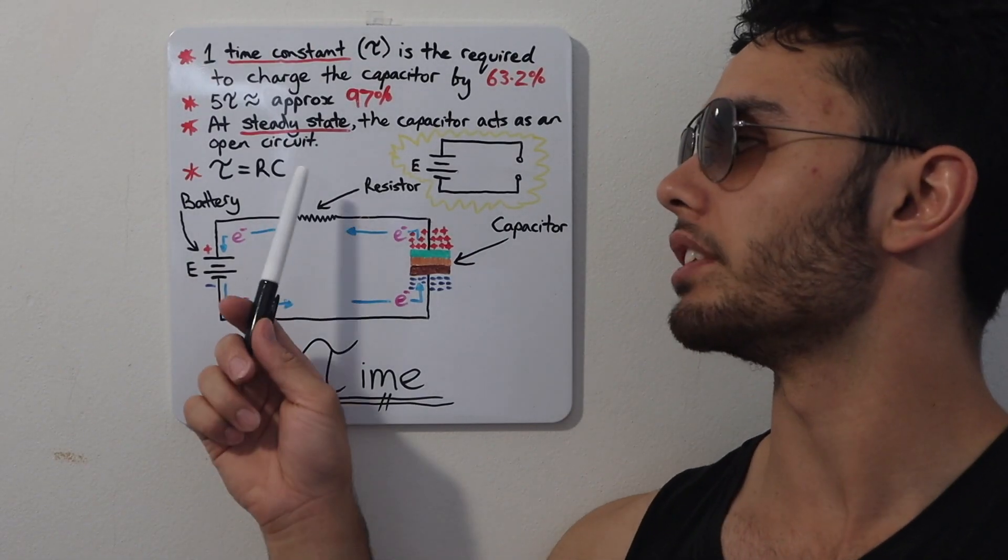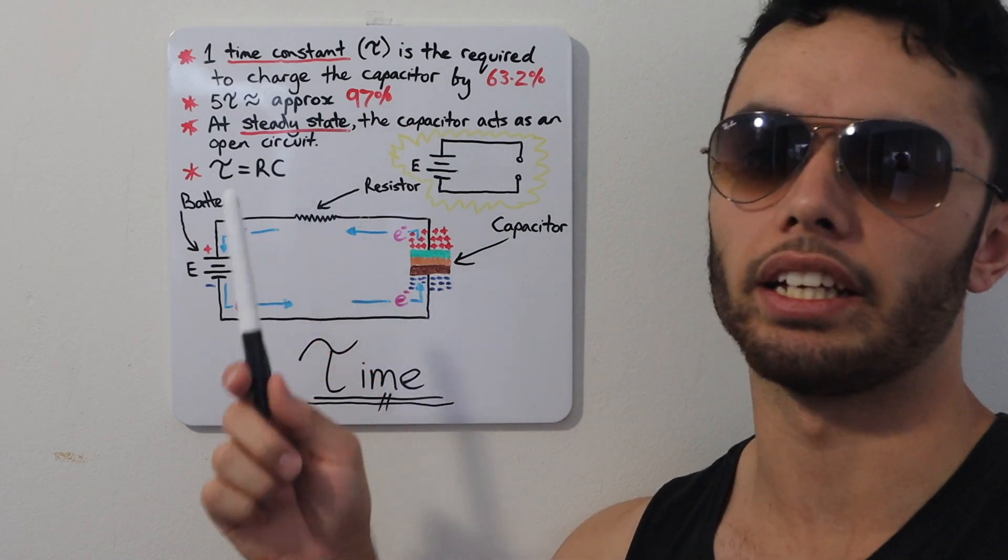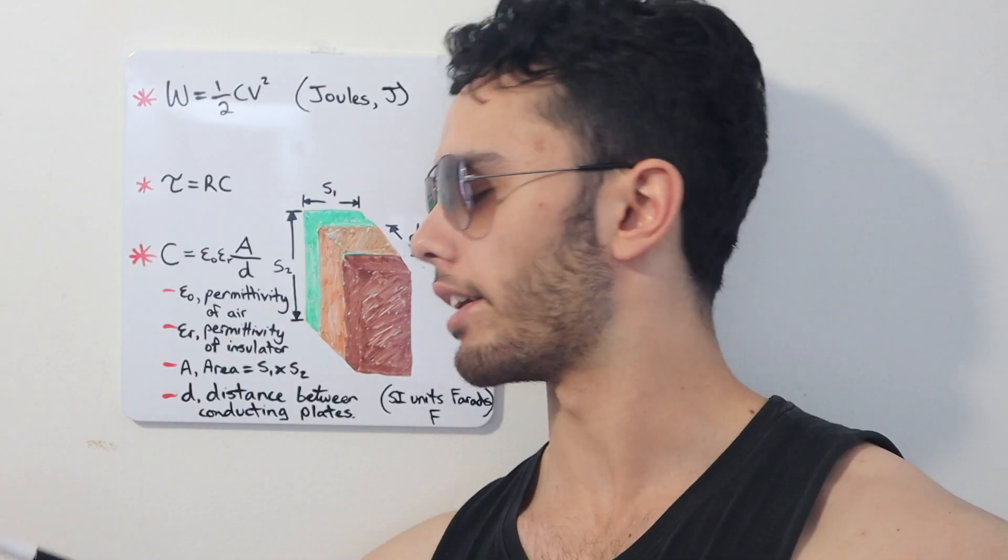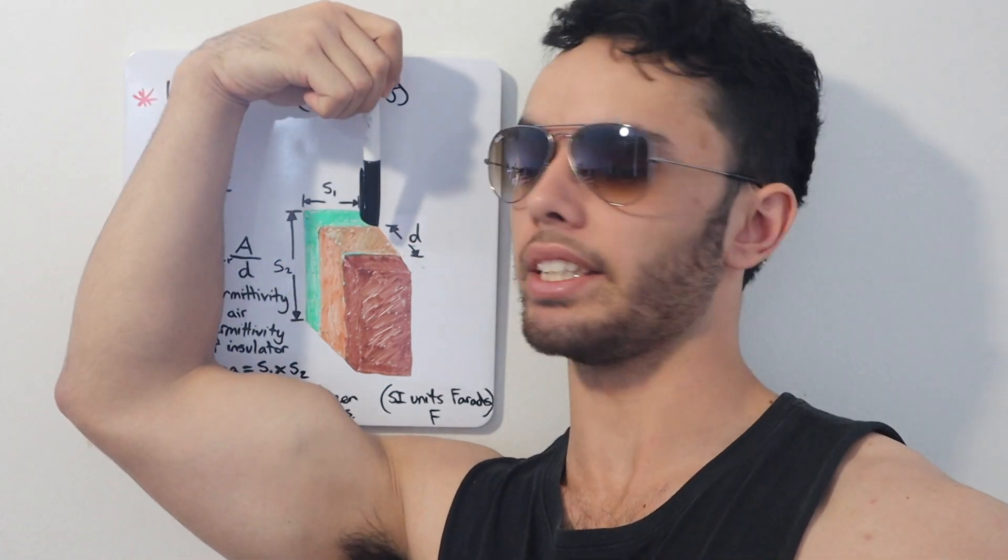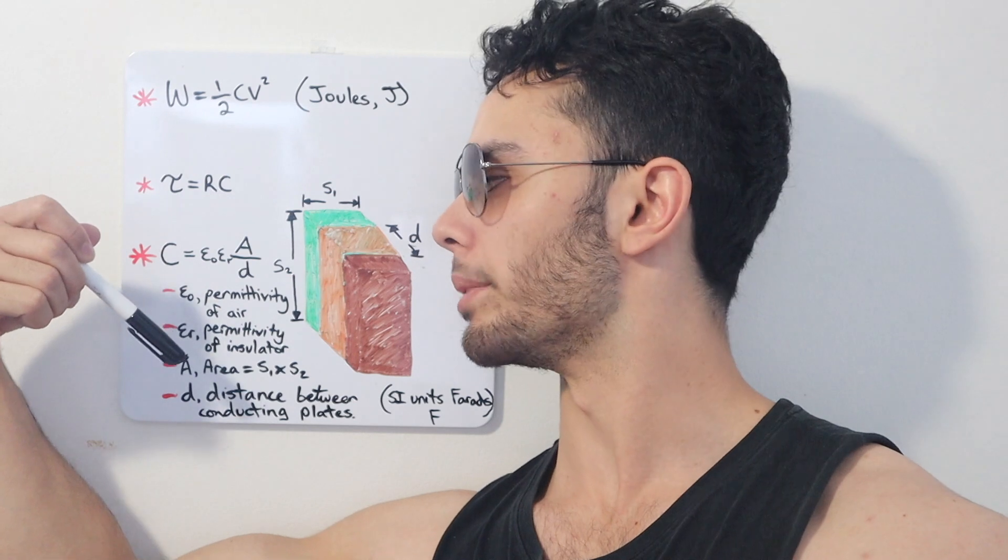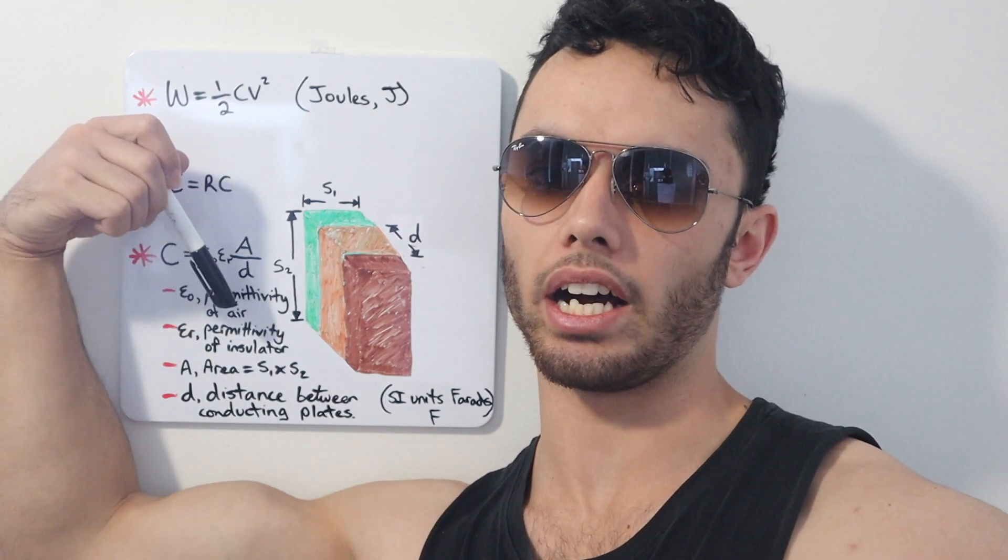The time constant is calculated simply by the product of the resistance and the capacitance in a circuit. Now, the capacitance is calculated by the area of the plates, S1 times S2, over the distance between them, D, multiplied by the permittivity of air, E0, and the permittivity of the insulator, ER.